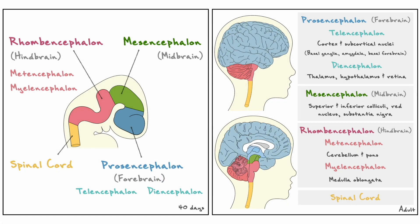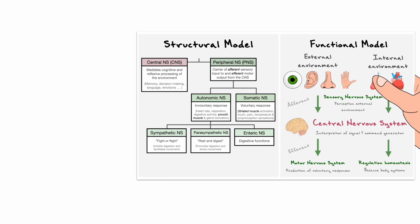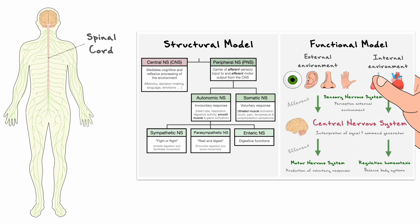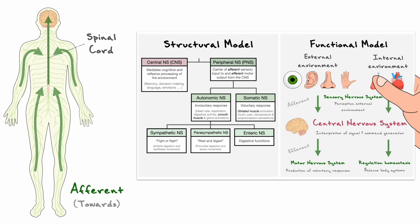Now that we have established the main components of this CNS, we can start exploring each structure in greater detail, starting with the spinal cord. The spinal cord represents an important hub in receiving sensory afferent information such as touch, pain, temperature, and proprioception. The spinal cord is also an important hub for sending motor efferent information to the body via the peripheral nervous system.